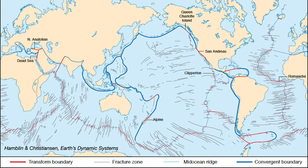Here is the global distribution of transform faults. The vast majority are underwater and connect active ridge segments, but several — both underwater and on land — connect other plate boundary types. Note that only the transform sections between ridge segments of opposite spreading direction are actually active; the rest of the transform fault is inactive and referred to as a fracture zone.